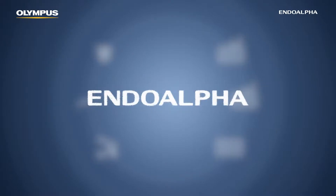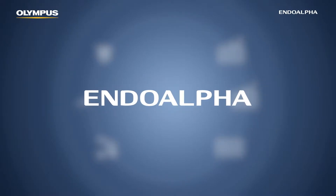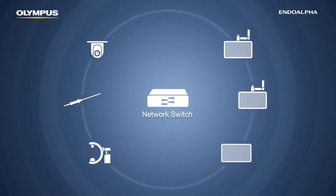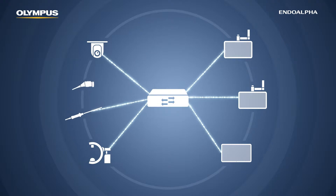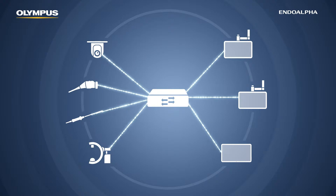With IndoAlpha, Olympus will simplify OR integration. By creating a network and using IP routing with fiber optic cables, only one type of cable and a converter for each device and monitor are required. Adding a new device means only one additional fiber optic cable and converter, regardless of which type of device gets connected.